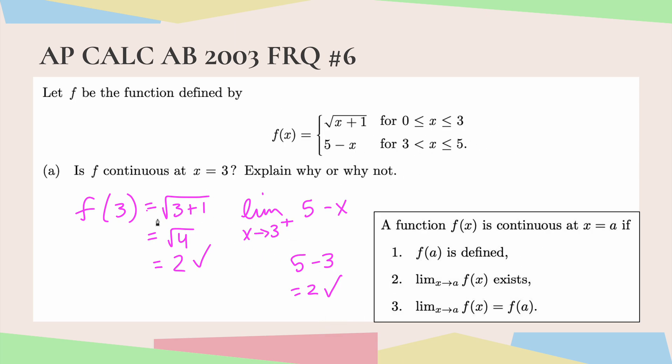Now let's check the limit from the left, which we kind of already did here because we were using that function rule, but I'm going to write it out. The limit from 3 to the left, we're using this function rule. Square root of x plus 1, we use direct substitution. Root 3 plus 1 is root 4, which also equals 2.